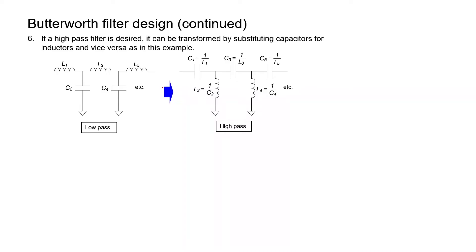Now we need to scale our prototype circuit to match the values in an actual circuit. Before we do this scaling, now is the time to transform the low-pass filter into other filter types. For example, if we want to convert our low-pass filter into a high-pass filter, everywhere you see an inductor in your prototype circuit you need to replace it with a capacitor, and everywhere you see a capacitor you need to replace it with an inductor. Then you need to scale the values by taking the reciprocal.